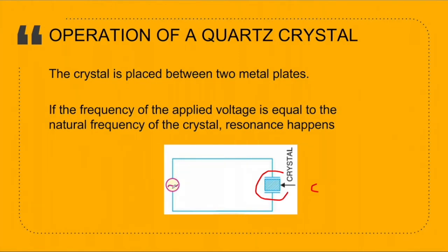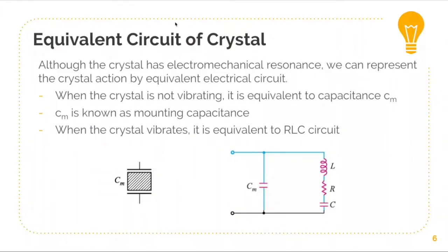If the frequency of the applied voltage is equivalent to the natural frequency of the crystal, then resonance will take place and the crystal vibration will reach its maximum value. The crystal oscillator can be represented by components R, L, and C. When the crystal is not vibrating, it acts like a capacitor with a mounting capacitance Cm. When we apply AC voltage, its operation can be approximated as a series RLC branch connected in parallel with the mounting capacitance.